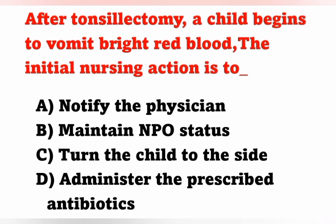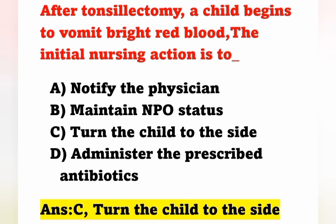Next question: After tonsillectomy, a child begins to vomit bright red blood. The initial nursing action is: Option A: Notify the physician; Option B: Maintain NPO status; Option C: Turn the child to the side; Option D: Administer prescribed antibiotic. After tonsillectomy, if the child vomits bright red blood, the correct initial nursing action is Option C — turn the child to one side — mainly to prevent aspiration.